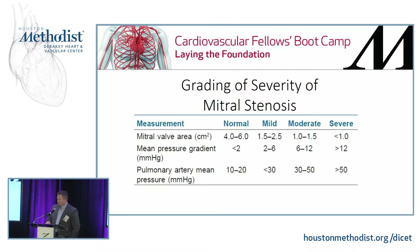How do we grade mitral stenosis? We can do it with a number of different methods — TEE and TTE. We can determine a mitral valve area, a mean pressure gradient, and the mean pulmonary artery pressure. If the mitral valve area is less than one centimeter squared, it's considered severe mitral stenosis and should be treated. Mean pressure gradient is debatable — somewhere around 10 to 12; anything over that is considered severe, 6 to 12 is moderate, and below that is mild.